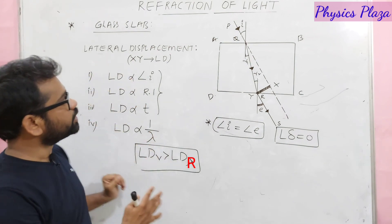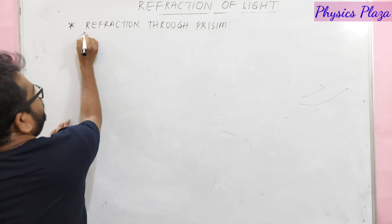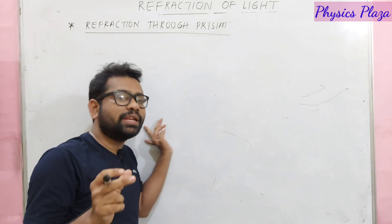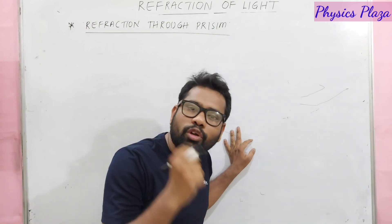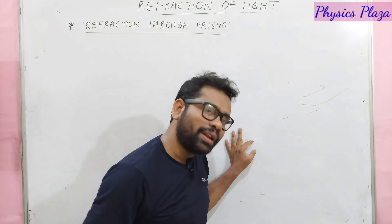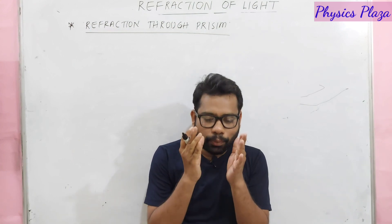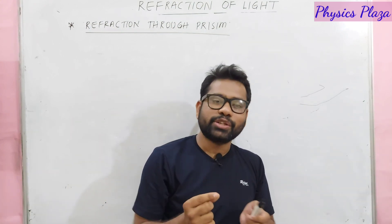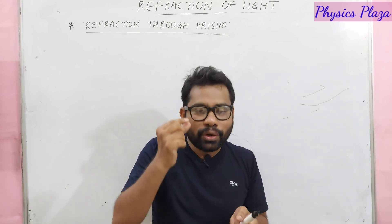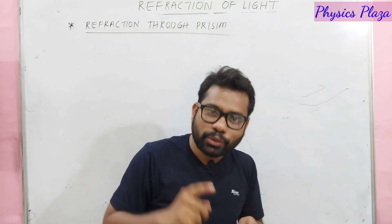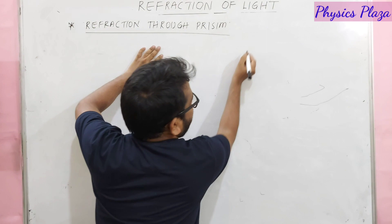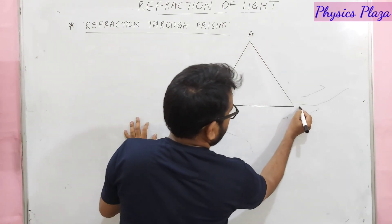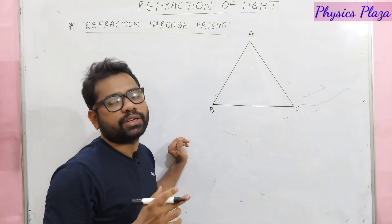Now we will see refraction through a prism. We are taking only monochromatic light for this case. Polychromatic light through a prism will be discussed in the next session. Consider an equilateral prism ABC where AB and AC are the refracting surfaces, and BC is the base of the prism.